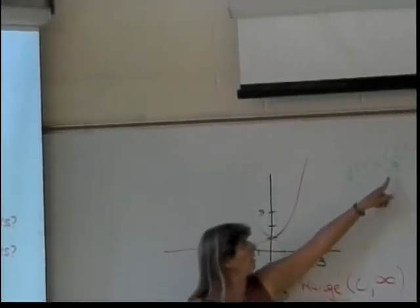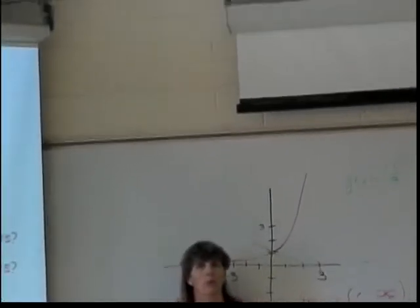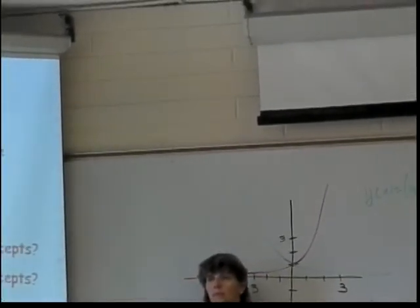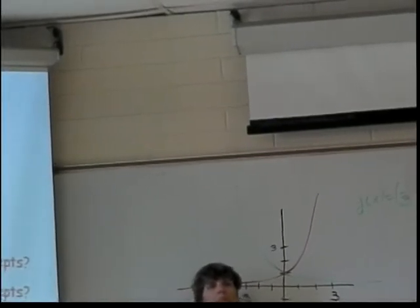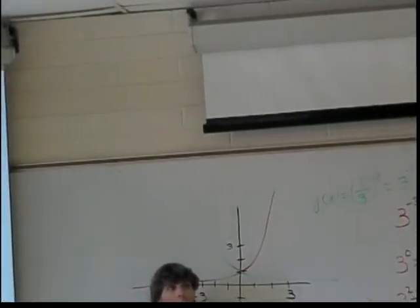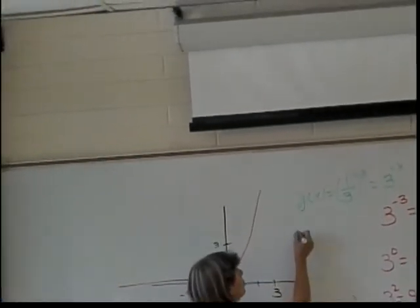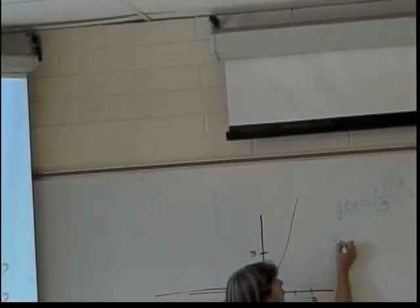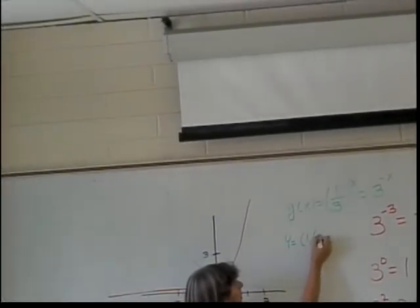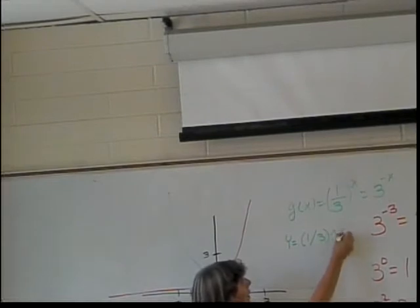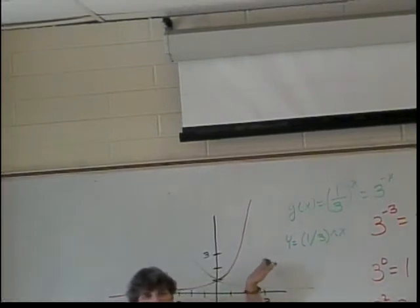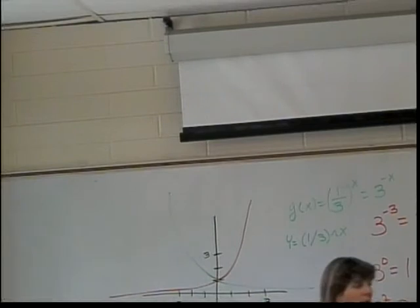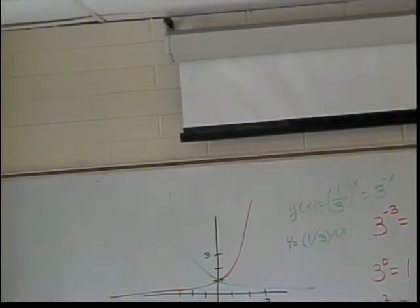How would you put this into your calculator if you wanted to graph it? Yeah, you might probably want those parentheses. So this would be in your Y1. This would probably look like 1 divided by 3 raised to the X, or you could do 3 raised to the negative X. Either one would be fine. So we know that flips it over to the Y axis.